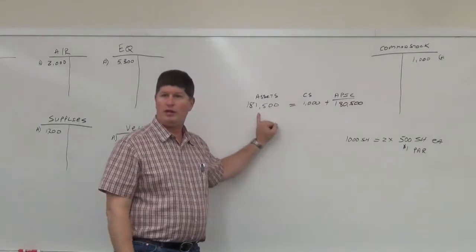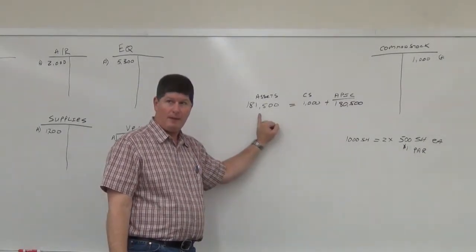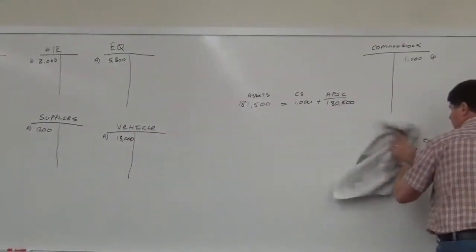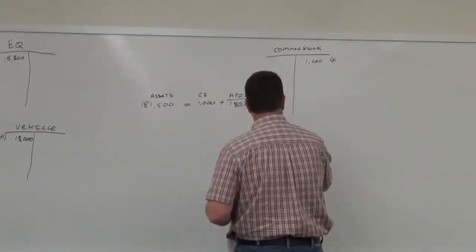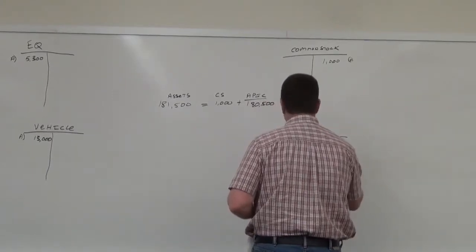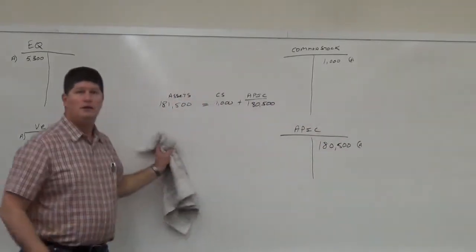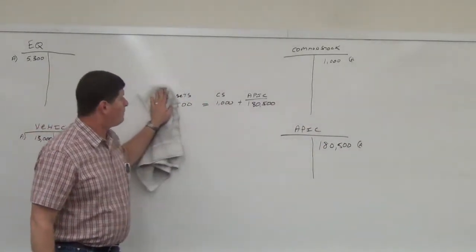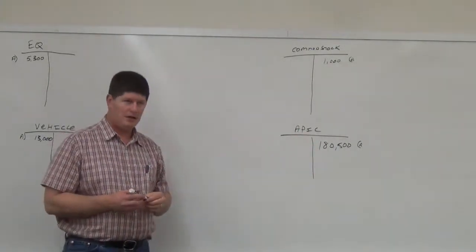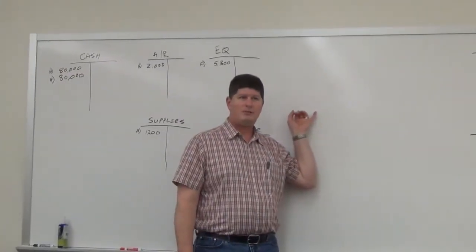You add common stock and additional paid-in capital together to get $181,500. I'll erase and write in additional paid-in capital of $180,500 for transaction A. Now I'm in balance. Was that where you were challenged, or do you want to keep going? I'm more than happy to keep going.